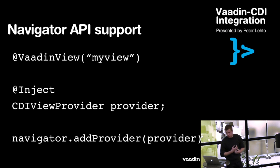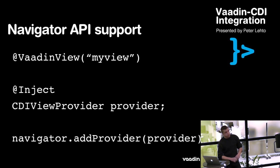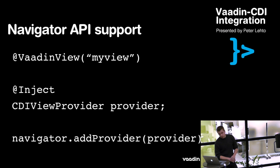A couple of words about the Navigator API. In Vaadin 7 there is a new API for navigation which works with UI fragments, and the CDI integration works with this so that all your views are annotated with the @VaadinView annotation, similar to how you annotate UIs, except that views must implement the Navigator API's View interface. You can then inject a CDI ViewProvider into your UI, and the view provider looks up the actual URI fragment from your URL and, depending on the implementation, can provide the view which will be forwarded to the actual navigator. To use the view provider you simply must add it to the navigator with the addProvider() API method.